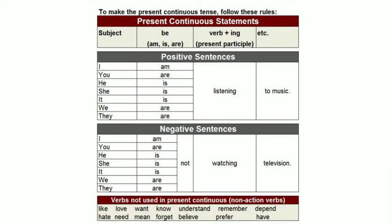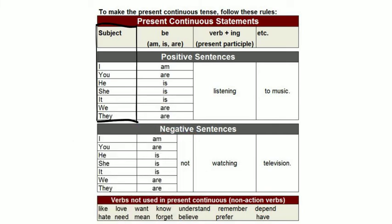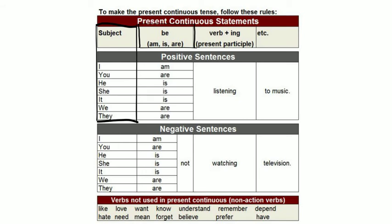Let's look at this table. This table explains how to make sentences with the present continuous tense. First, we start with a subject, such as I, you, he, she, they. But remember, the subject can be a noun as well, such as Mr. Smith, Abu Dhabi, or the cafeteria. After the subject comes the helping verb and the present participle.